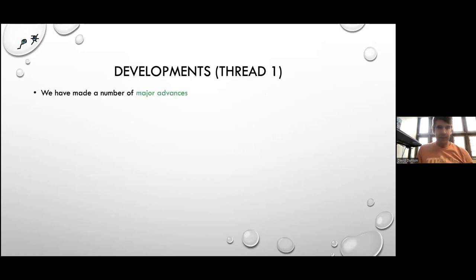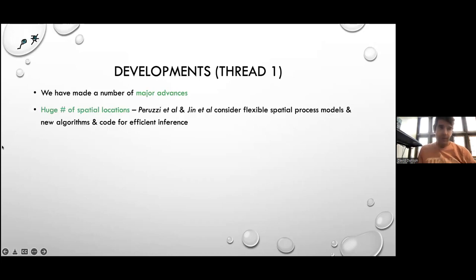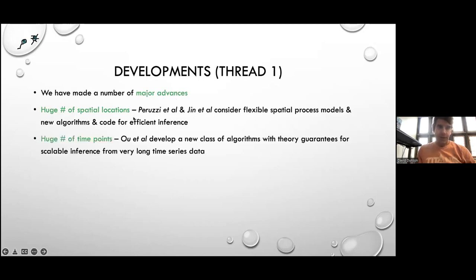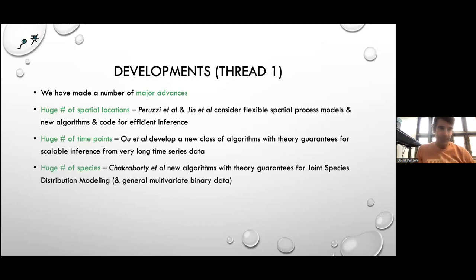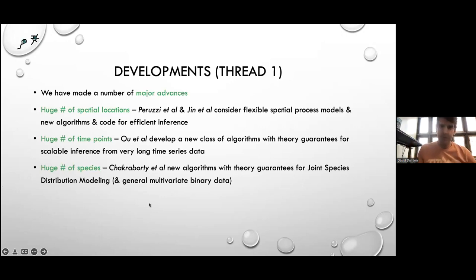We've made a number of major advances. The first thread deals with a huge number of spatial locations — postdoc Michele Peruzzi and PhD student Bora Jin have written papers very good at scaling up modeling to large numbers of spatial locations. We also have a paper under revision at a top international statistics journal on dealing with very long time series data. We've also been working on the huge number of species problem — most notably a paper under revision at that same top statistics journal developing scalable methods for joint species distribution modeling.